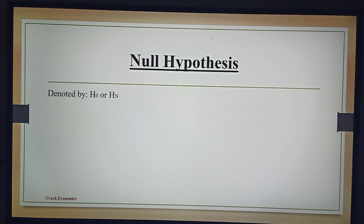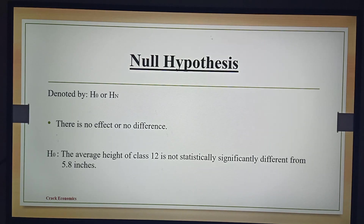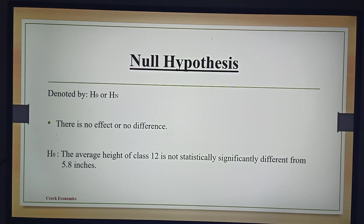Null hypothesis is denoted by H0 or Hn. Basically, it says that there is no effect or no difference. So, in our example, the null hypothesis is: the average height of class 12 is not statistically significantly different from 5.8 inches. In other words, the average height of class 12 is 5.8 inches.